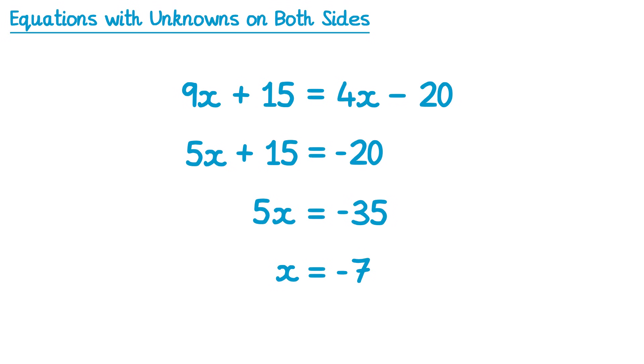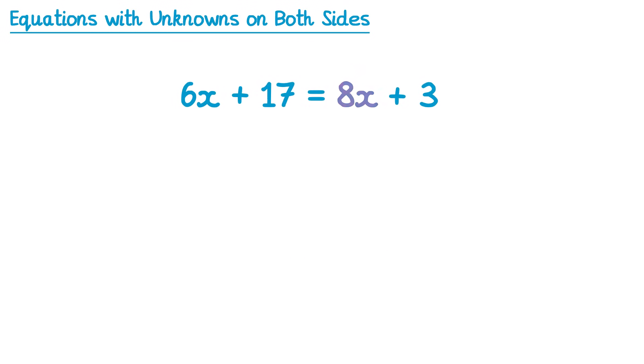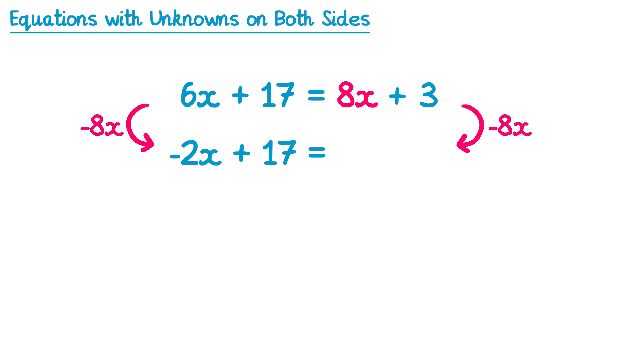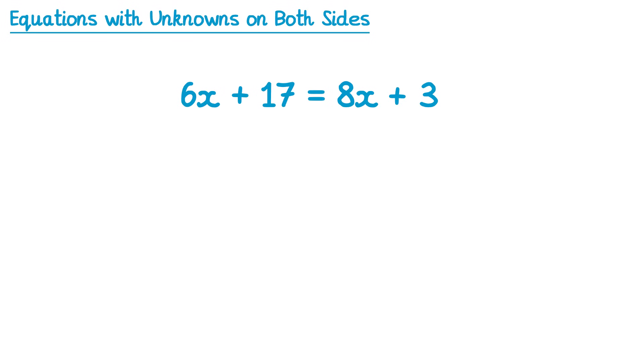Next we're going to look at an equation that has a key difference to all of the ones we've looked at so far. Because of this 8x on the right-hand side, your first step could be to subtract 8x from both sides. On the left-hand side, when we do 6x subtract 8x we get negative 2x. However, we end up with this negative 2x, which isn't as nice as when it's positive. So there is another approach I would recommend: because the left-hand side equals the right-hand side, you could just write them the other way around — so instead of 6x plus 17 equals 8x plus 3, we write 8x plus 3 equals 6x plus 17. The reason we ended up with that negative 2x before was because 8x was greater than 6x, so we had more x's on the right-hand side. If you have fewer x's on the right-hand side, you won't end up with a negative.